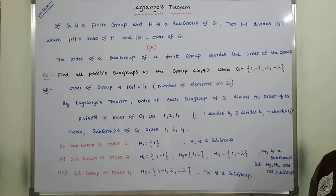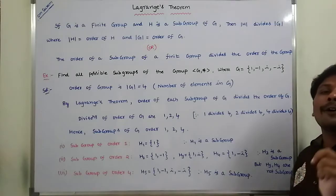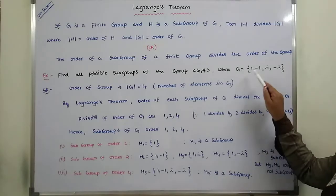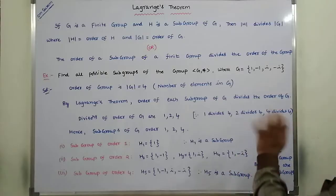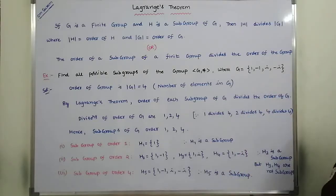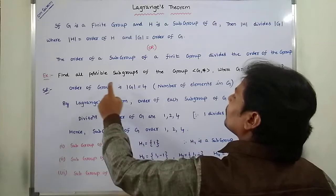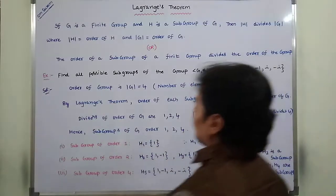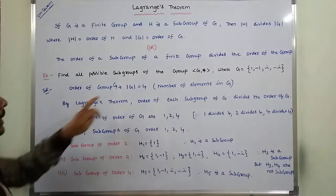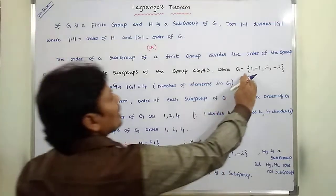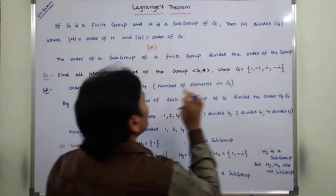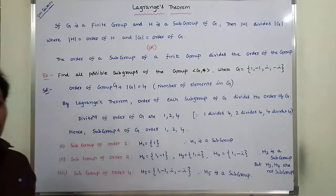So how many elements are there? That is nothing but the order of G. G contains four elements, so hence we can say that mod G equals order of G, which equals the number of elements in group G. That is equal to four, because there are four elements: 1, 2, 3, 4. So mod G is equal to four.